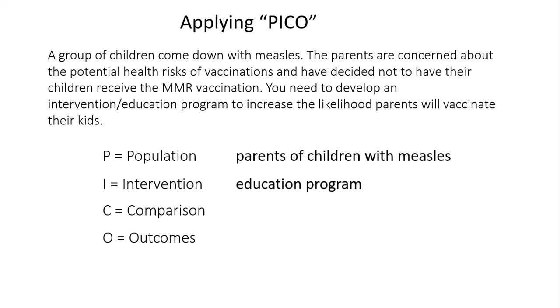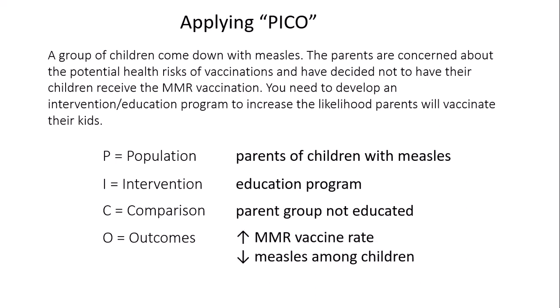The C comparison would be a parent group that's not educated. And the O outcomes you want to find are an increase in the MMR vaccine rate and a decrease in the rate of measles among children.